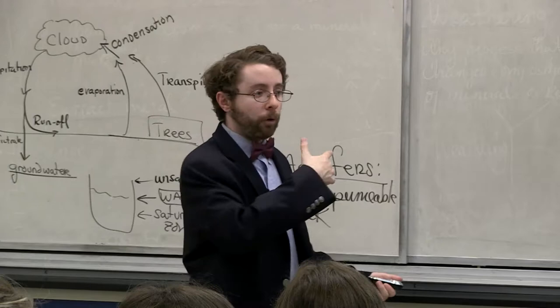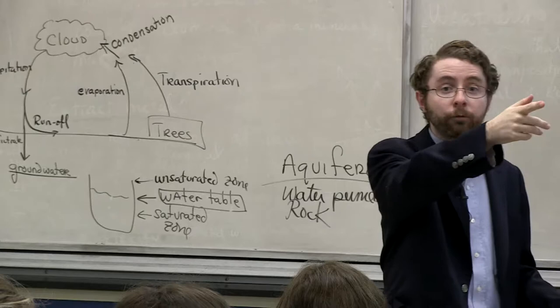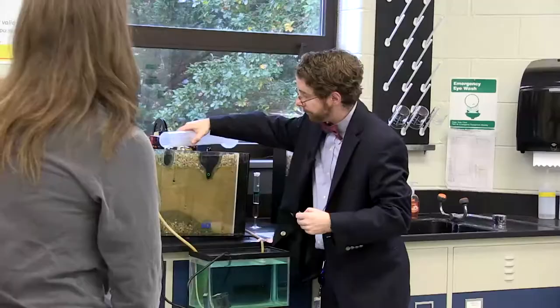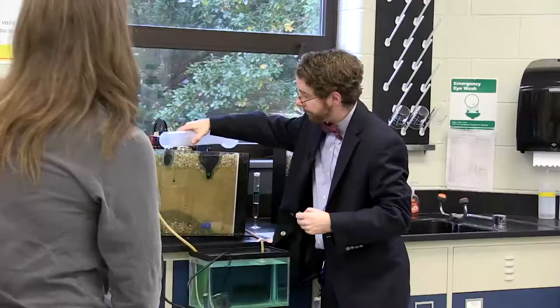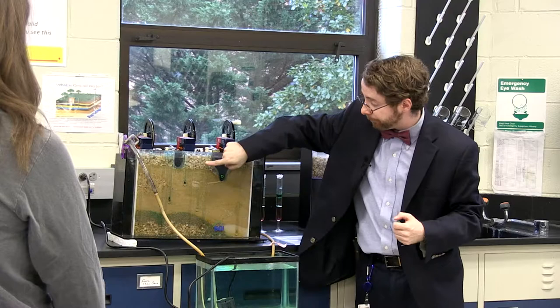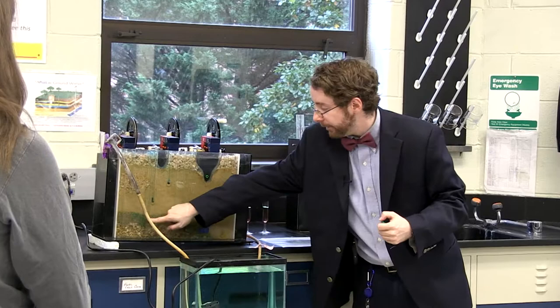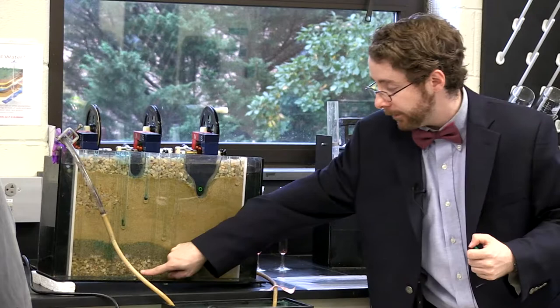The idea of groundwater is very dynamic, and to show you that I have a groundwater model set up. Here is a model of an aquifer. I have two lakes here and the pipes you see are my wells. Up here is the unconfined zone, and down here beneath this layer of clay — which represents my impermeable barrier — I have a confined aquifer.